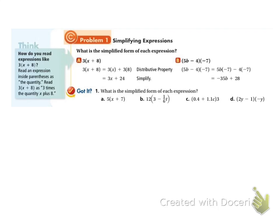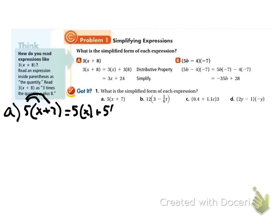Let's try our got it problems. Problem a is 5 times (x plus 7). We're going to distribute the 5 to the x and to the 7. This is equal to 5 times x plus 5 times 7, which is equal to 5x plus 35.